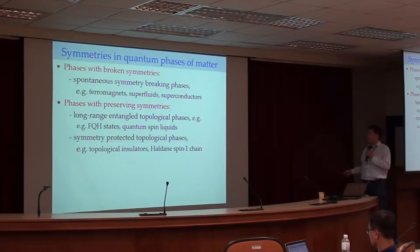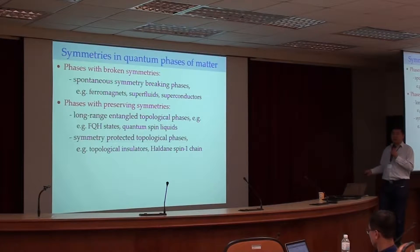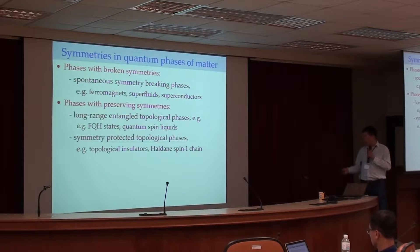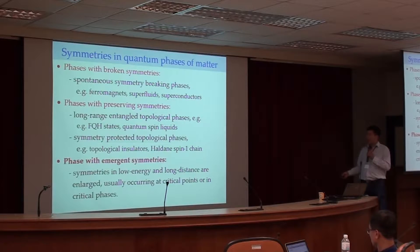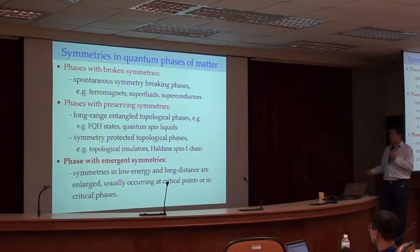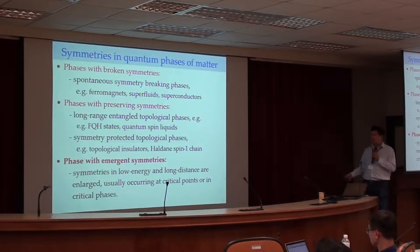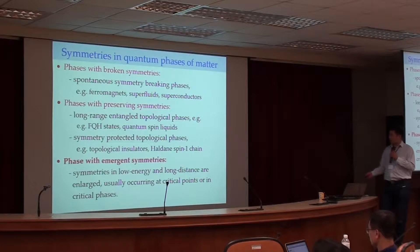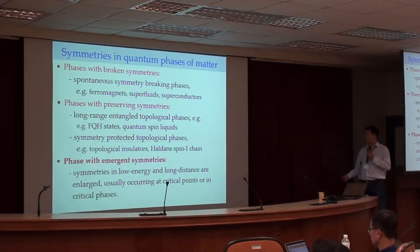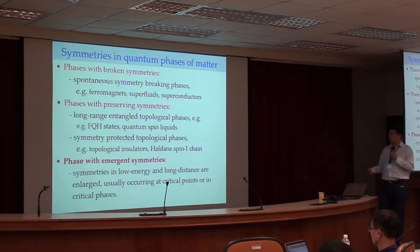Symmetry-protected topological phases do not have intrinsic topological order, but they have gapless boundary states which are protected by the symmetry in question. Today I will focus on another aspect: phases with emergent symmetry, namely the symmetry in the ground state or at low energy and long distances is larger than the symmetry of the microscopic models. Such emergent symmetry usually occurs at critical points or critical phases where the length scales diverge.